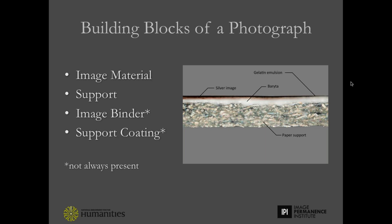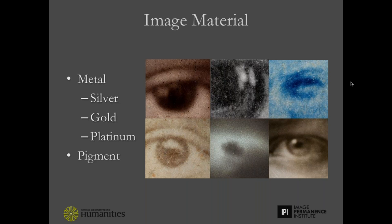I want to start by introducing you to the materials used to make photographs as an overview. The simplest photographs in terms of structure are those with just a substrate and the image material. Some photographs also have a binder which holds the image, and some prints have a support coated with an additional coating.